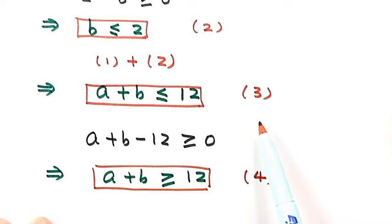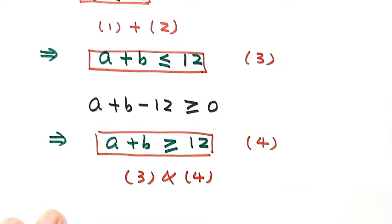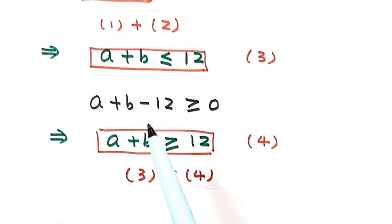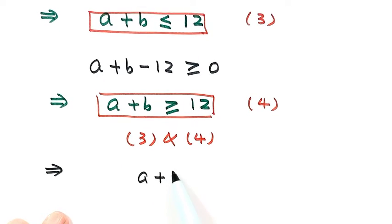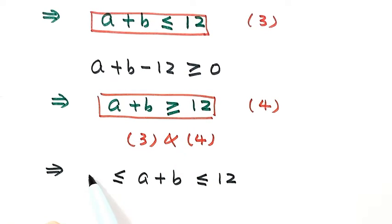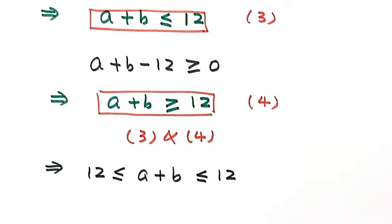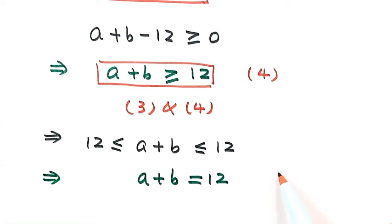Now let's combine result 3 with result 4. From result 3 we have a plus b is less than or equal to 12, and from result 4 we have a plus b is bigger than or equal to 12. So that means a plus b can only be 12. We mark this as result 5.